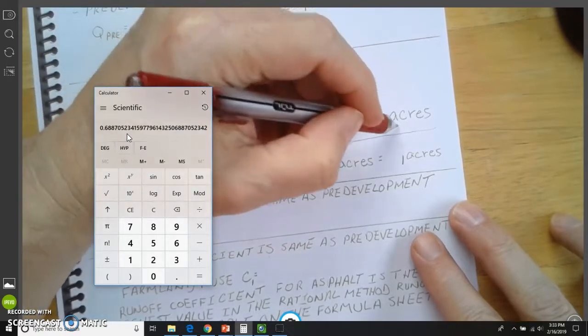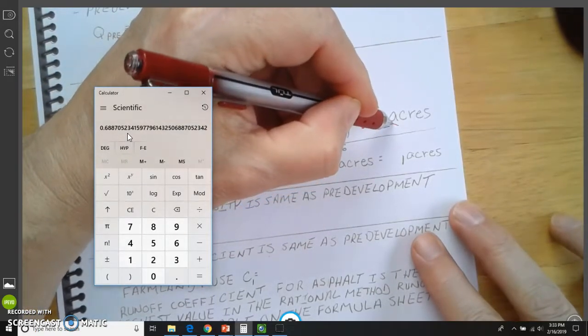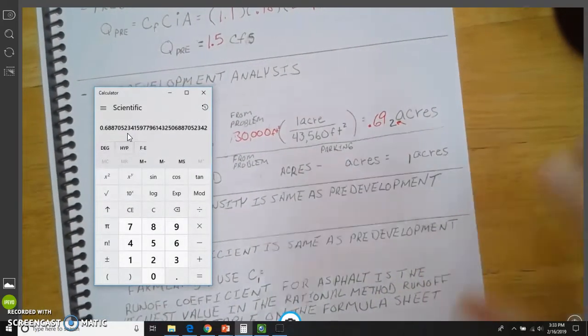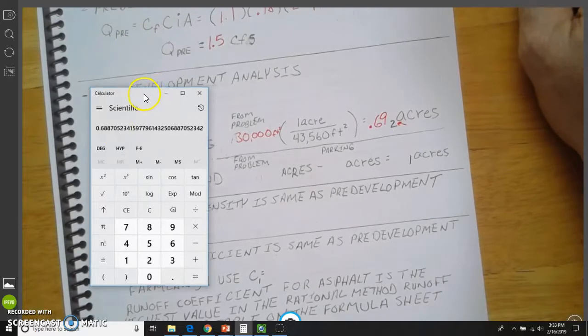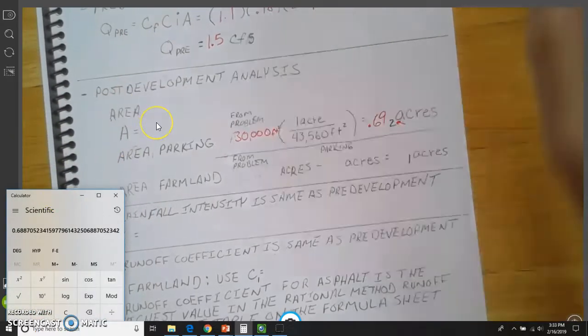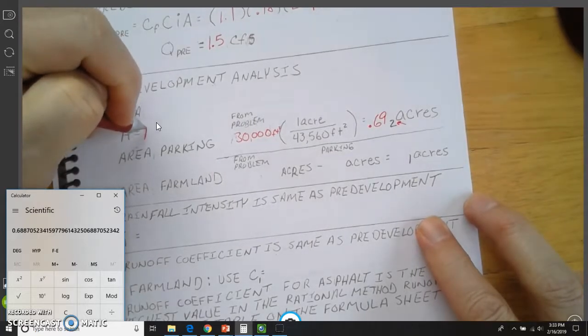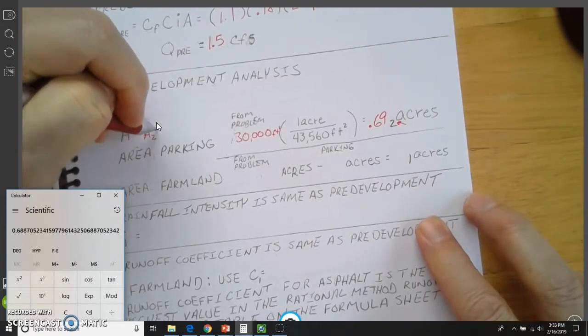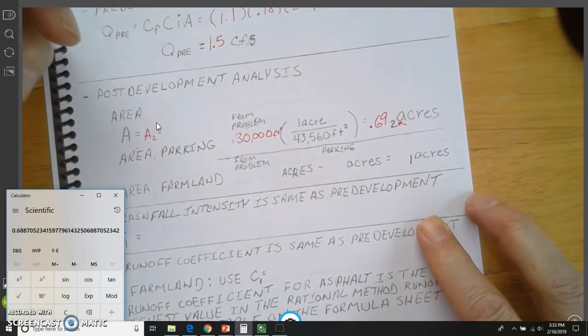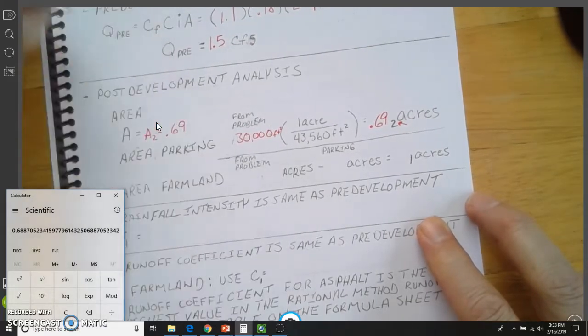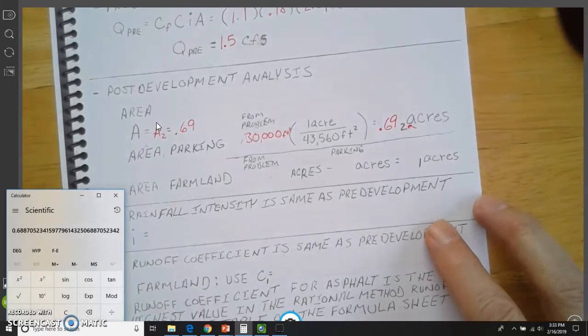Now, an important thing is, for later in the problem, is to pay attention to the fact that this has got a number two on it. So as a matter of fact, what I'm going to do here is write area two is equal to 0.69. That'll help me keep this straight.